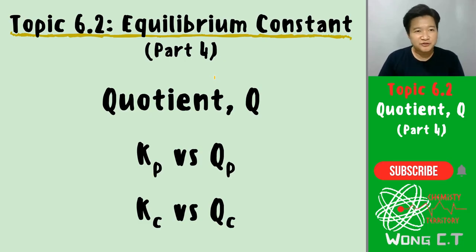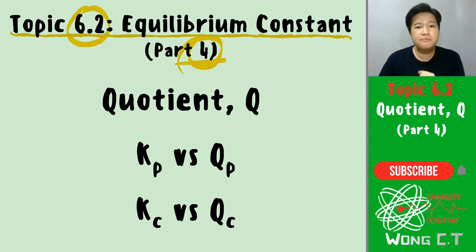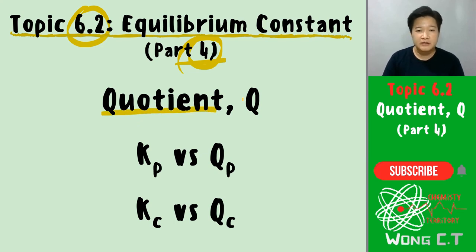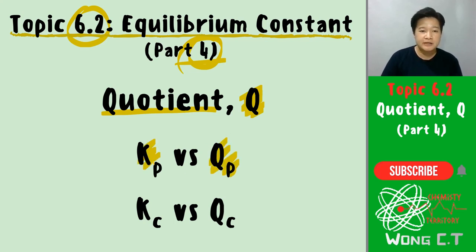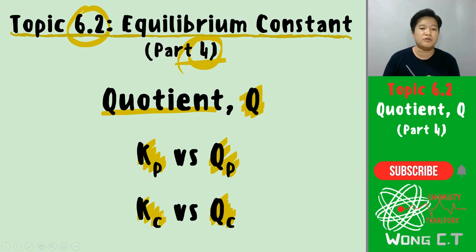Welcome to Wong Chemistry channel. This video is Part 4 of Topic 6.2, talking about equilibrium constant. In this video we are going to discuss about the reaction quotient Q — specifically what makes Qp and Kp different, same goes for Qc and Kc, and when we use K versus Q.